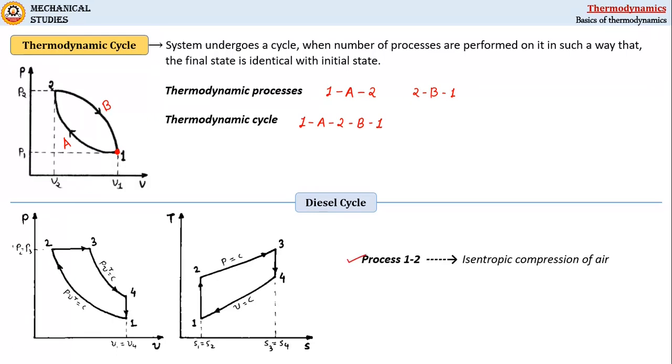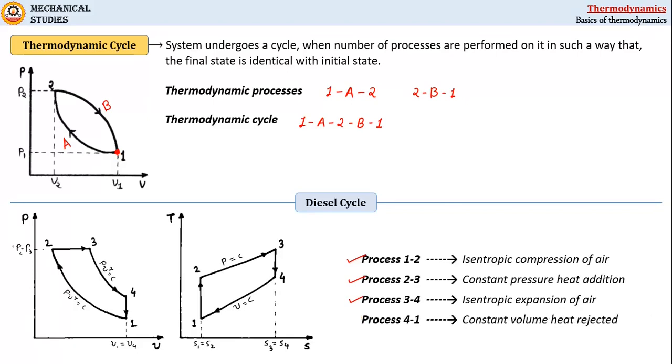Second process, 2 to 3, is constant pressure heat addition. Third process, 3 to 4, is isentropic expansion of air. And the last process, 4 to 1, through which the system comes to its initial condition 1, is constant volume heat rejection.